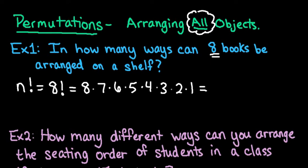The reason that it's 8, 7, 6, 5, 4, 3, 2, 1 is because once you put a book in the first spot, you now only have 7 left to go in the second spot, then you have 6 left, and so on and so forth. That's why it is set up this way.